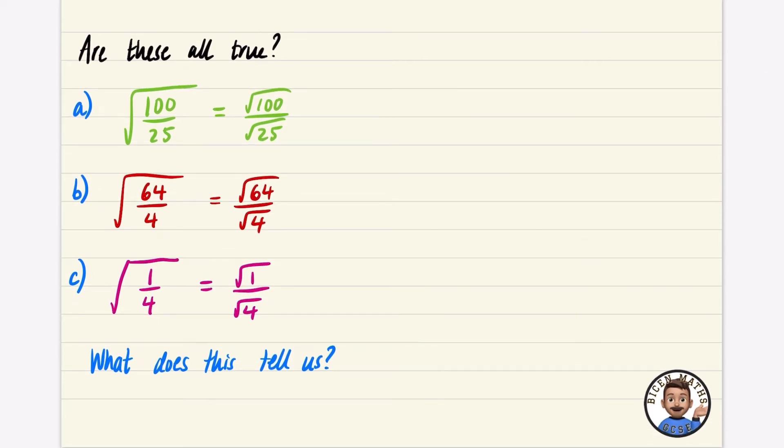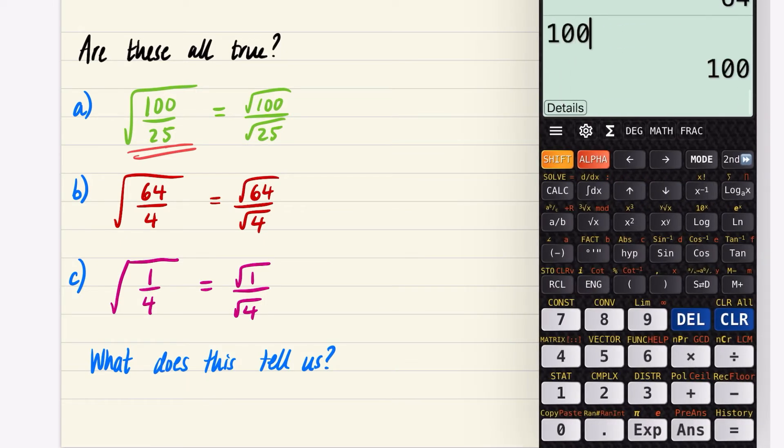So I'm going to begin by looking at this part that I've got here. I'm going to do 100 divided by 25. Well, that's not difficult. 100 over 25 is just going to be 4, right?